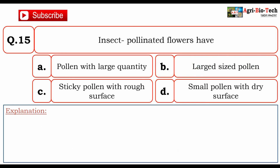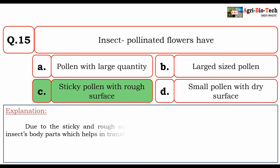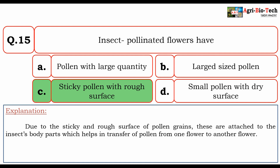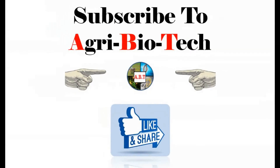Next question: insect-pollinated flowers have pollen with — large quantity, large-sized pollen, sticky pollen with rough surface, or small pollen with dry surface? The correct answer is C: sticky pollen with rough surface. Due to the sticky and rough surface of pollen grains, they attach to insect body parts, which helps in the transfer of pollen from one flower to another. Thanks for watching — please like and share this video, comment for any suggestions, and don't forget to subscribe to our channel Agribiotic.